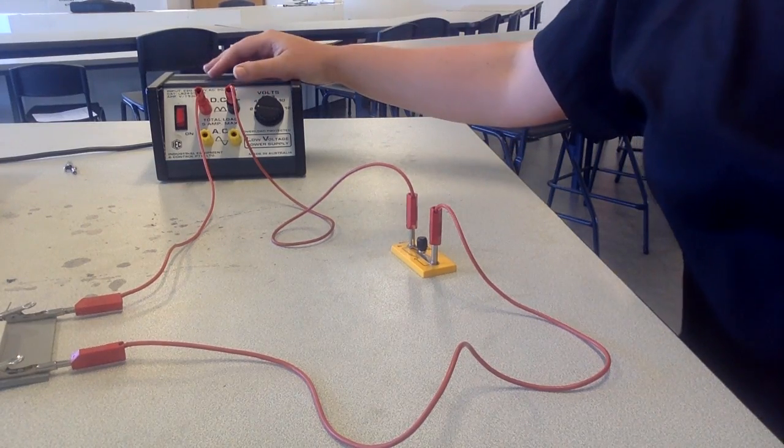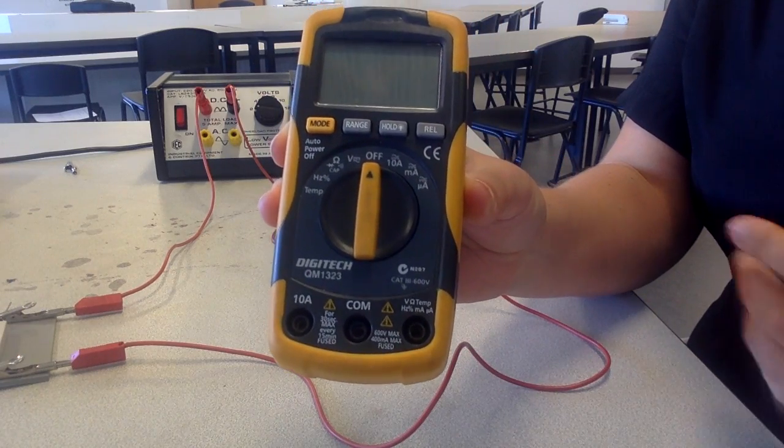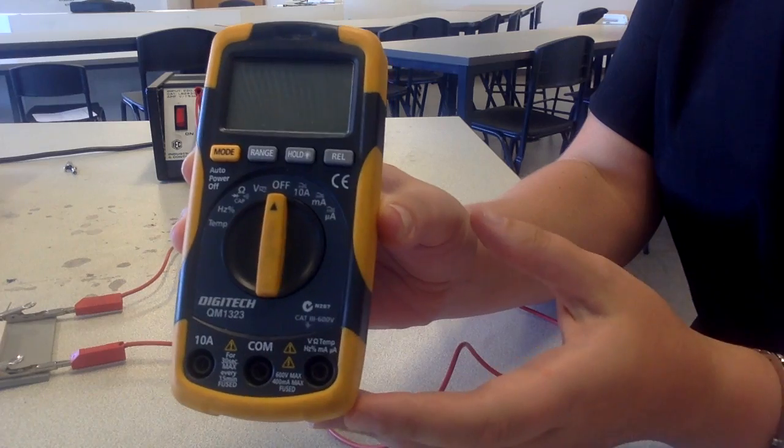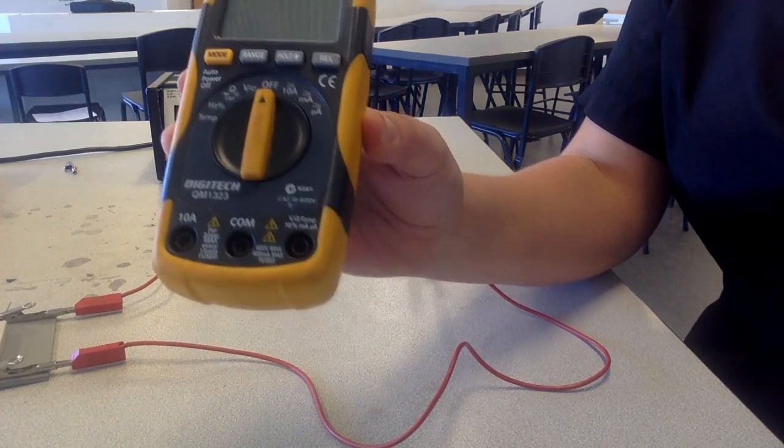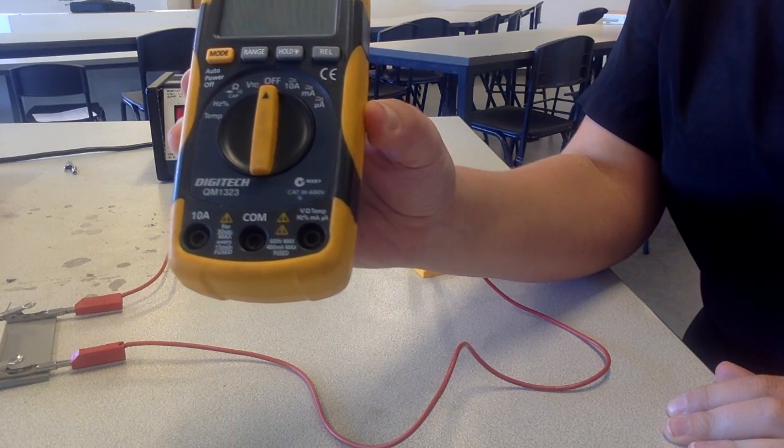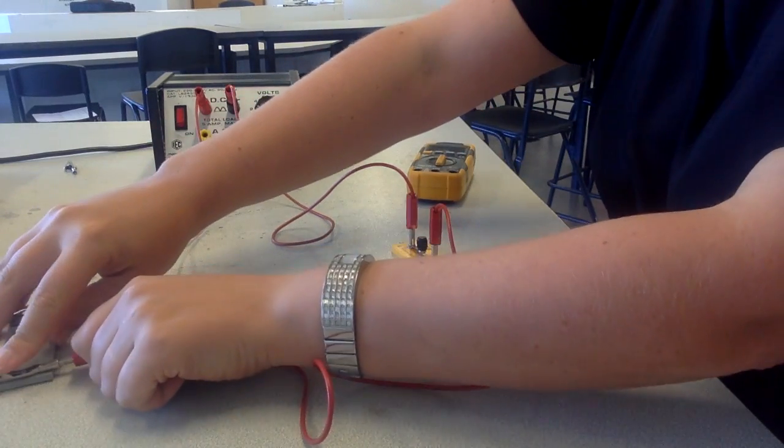So the first measuring device we're going to use is our ammeter. This is actually a multimeter so we can use it to measure voltage or current but today we're going to use this to measure our current. So remember, an ammeter must always be added in series into the circuit.